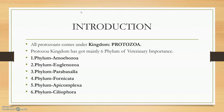All protozoans come under the kingdom Protozoa. The kingdom Protozoa has mainly six phyla of veterinary importance. The six phyla are: phylum Amoebozoa, phylum Euglenozoa, phylum Parabasalia, phylum Fornicata, phylum Apicomplexa, and phylum Ciliophora. These are the six phyla which have veterinary importance.